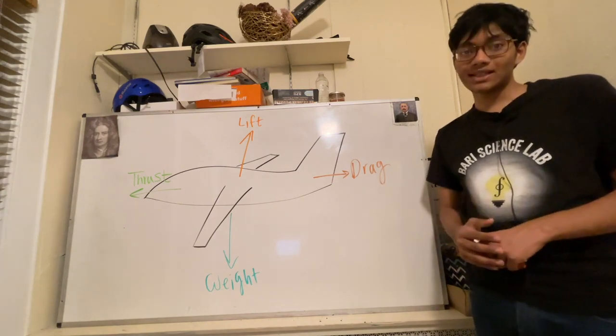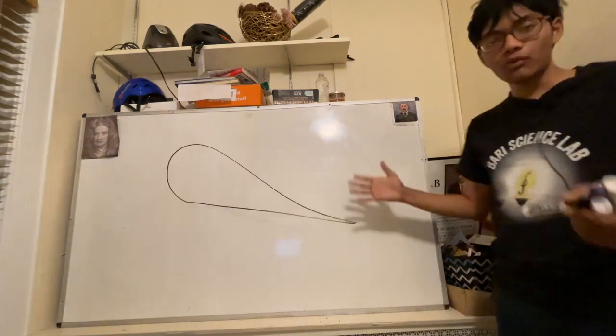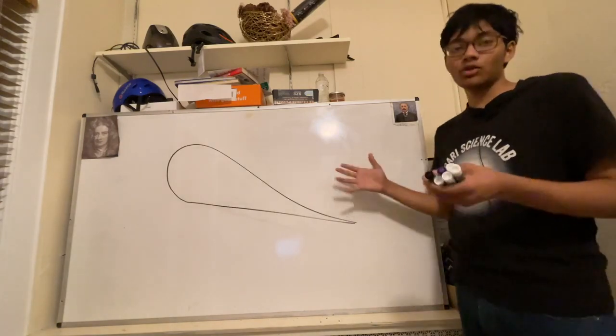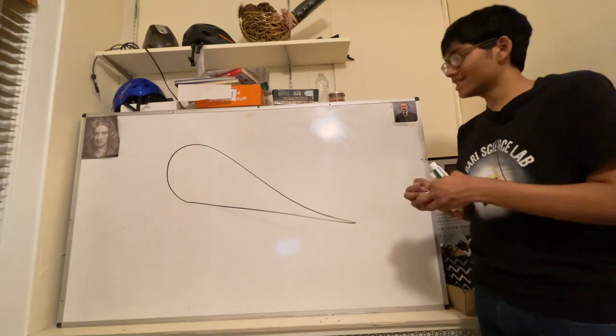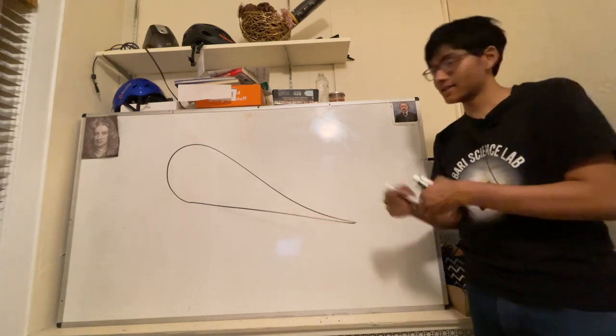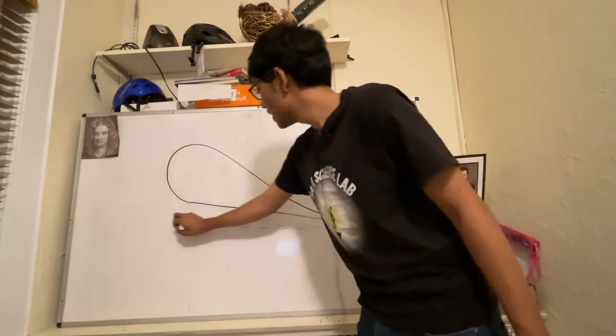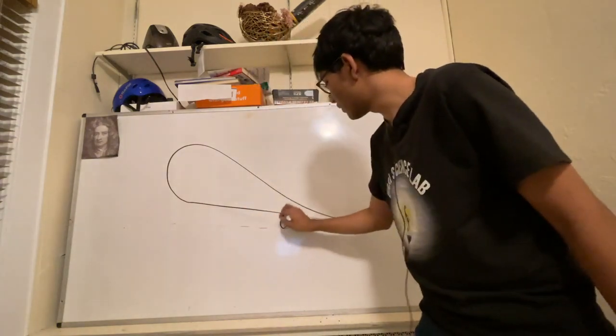But if the plane wants to accelerate, it's got to tip its nose at an angle of attack. So that's an airfoil—a cross section of an airplane wing. What happens when the airplane wing is tilted at an angle of attack like this? An angle of attack just means that the airplane's nose is pointed up at some angle, let's say theta.